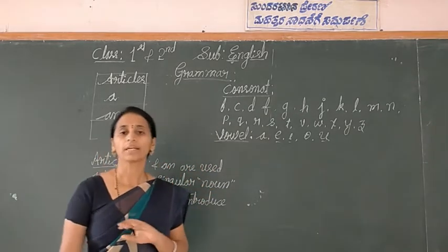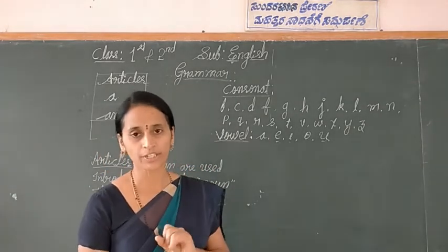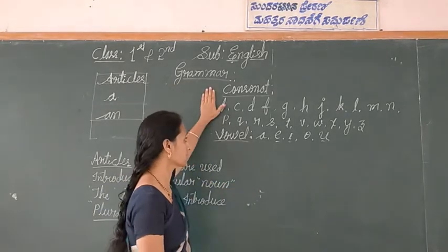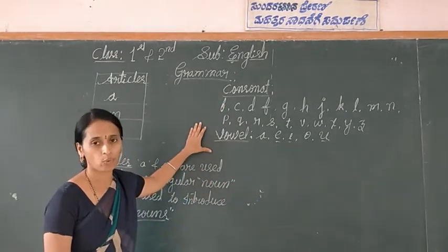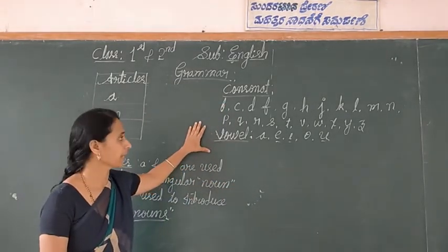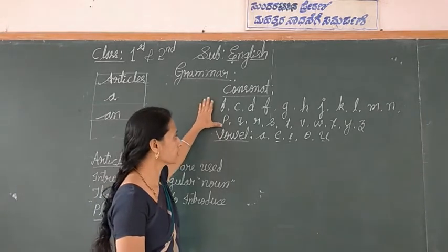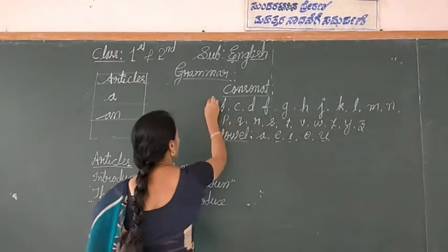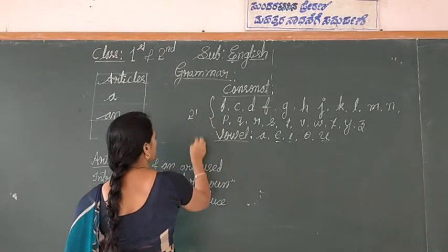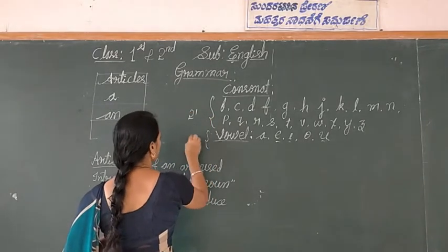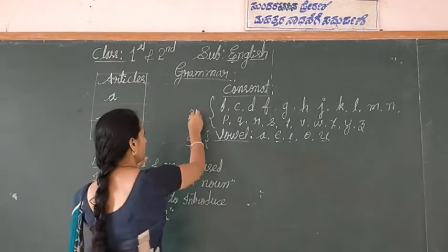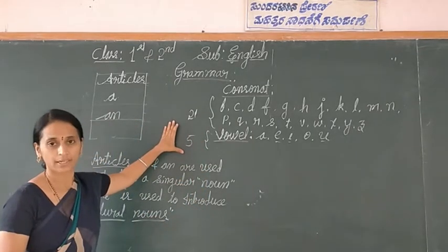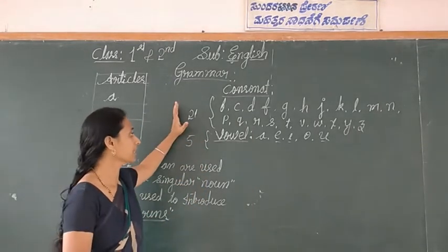In 26 alphabets we divide into 2 parts: one is the consonant and the second one is the vowel. Consonants are 21 letters, vowels are 5. 21 plus 5 is equal to 26 letters.